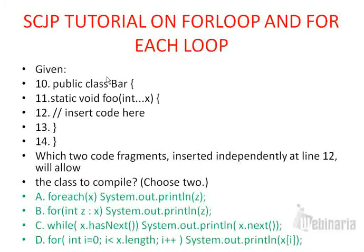Coming to option C: while (x.hasNext()) { System.out.println z.next(); }. This option is not valid. x is simply a variable — we don't have a hasNext() method on x. The hasNext() method belongs to an iterator. If we had an iterator on the x object we could call it like this, but here we don't have an iterator, we just have the variable. So x.hasNext() will give a compilation error, and option C is wrong.